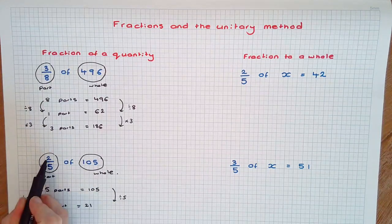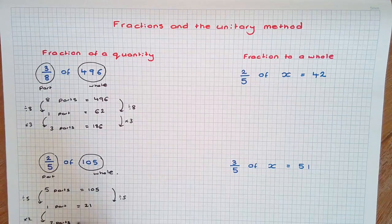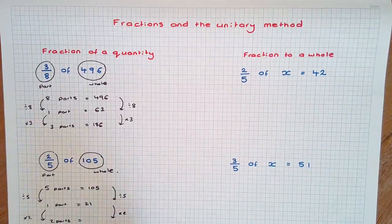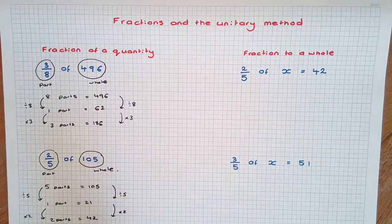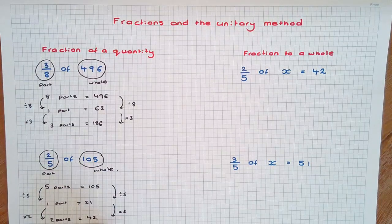We need to find 2 parts by multiplying 21 by 2 and we get 42. 2 fifths of 105 is 42, found using the unitary method.